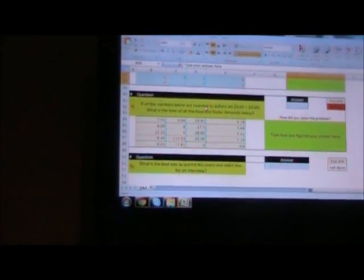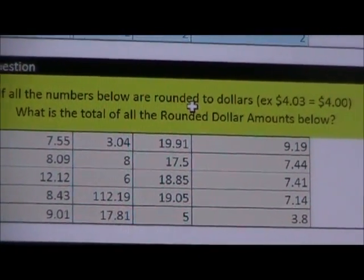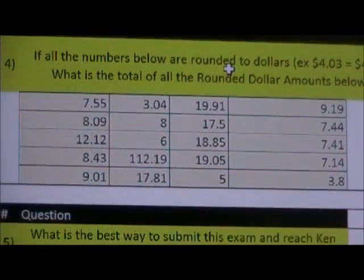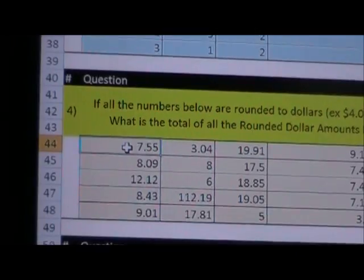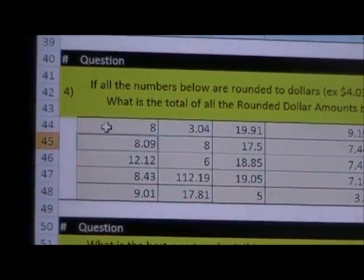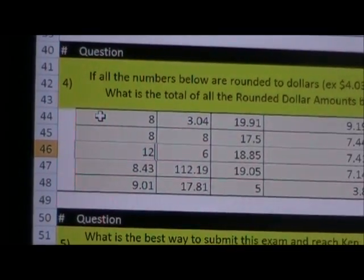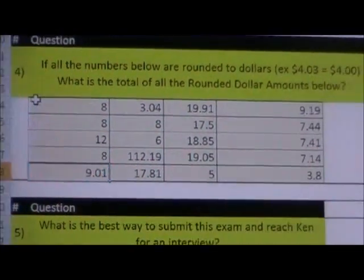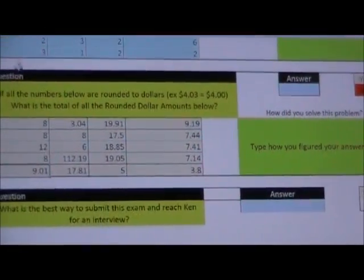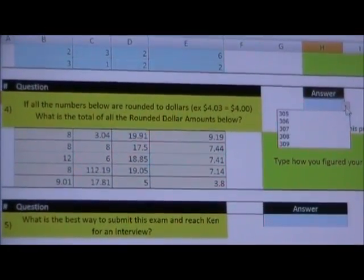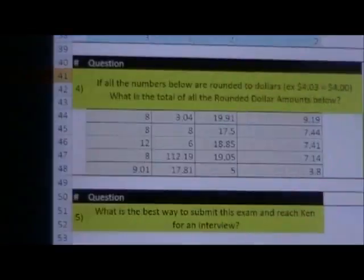Question number four says, if all the numbers below are rounded to dollars, meaning like $7.55 is going to be rounded to $8. Like $8.09 would be rounded to $8. $12.12 would be rounded to $12. $8.43 would be rounded to $8. If you rounded all of them, what would the sum of this be? I happen to know the answer to this as well. You type your answer there. There's a couple different ways to do that.